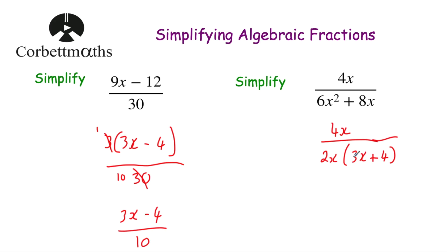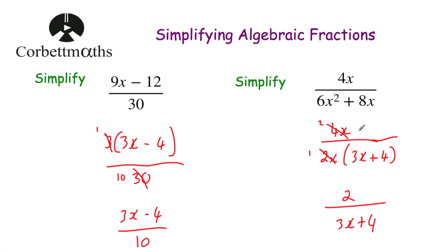Now we can divide both the numerator and denominator by 2x. 4x divided by 2x is 2, and 2x divided by 2x is 1, leaving just the bracket. So we're left with 2 over 3x plus 4. Simplifying 4x over 6x squared plus 8x gives the answer 2 over 3x plus 4.